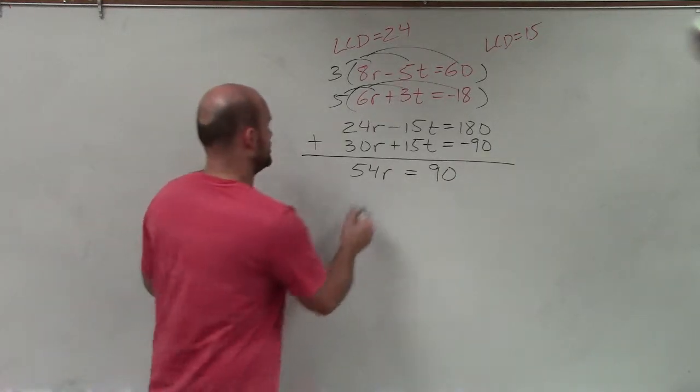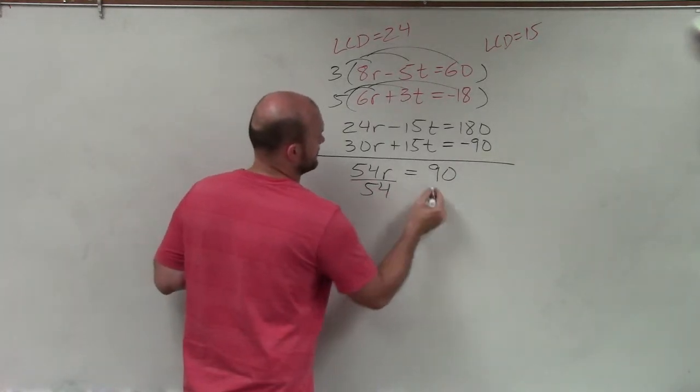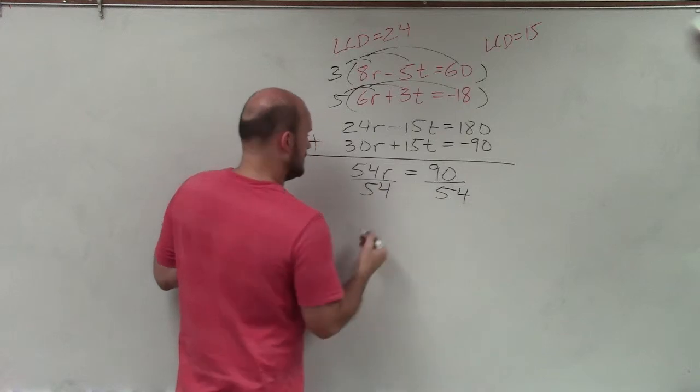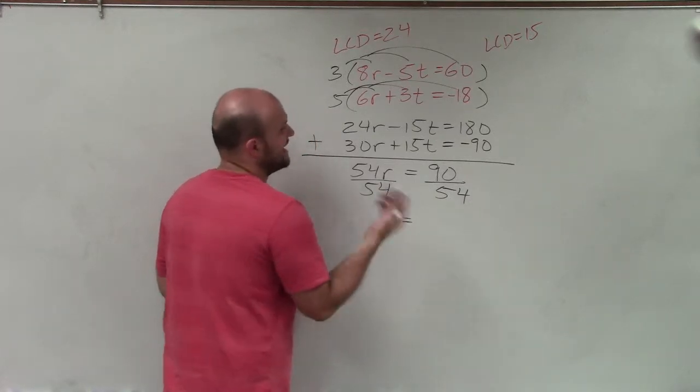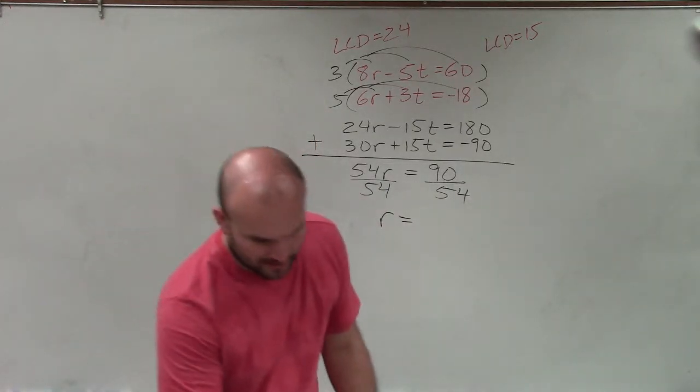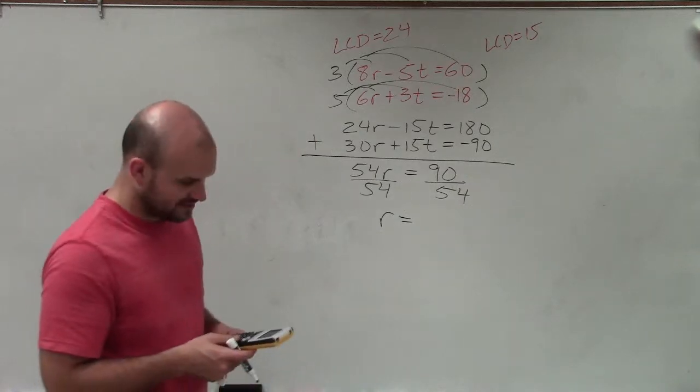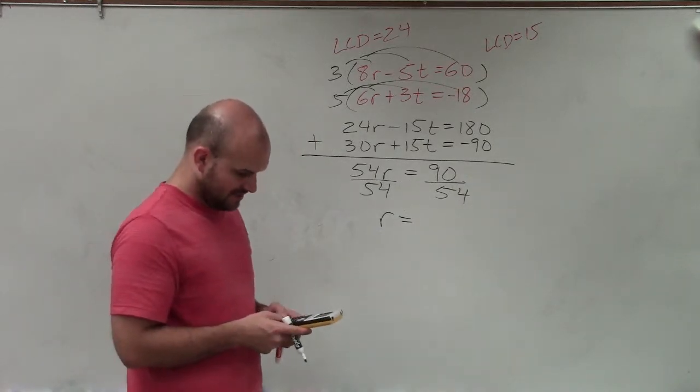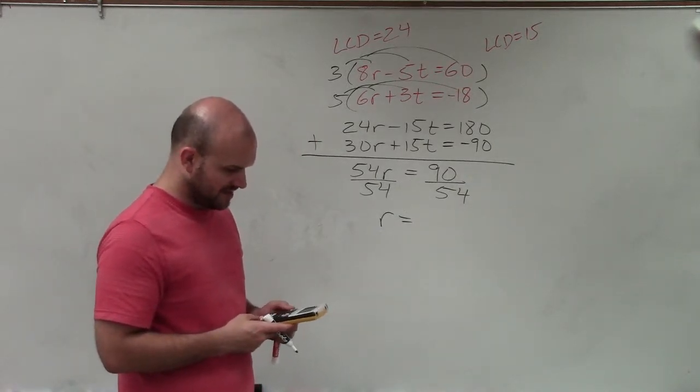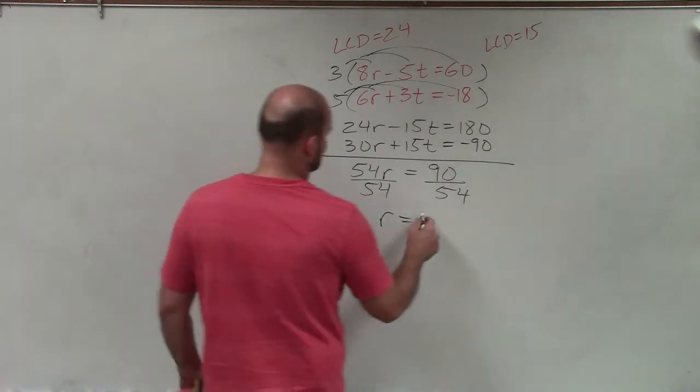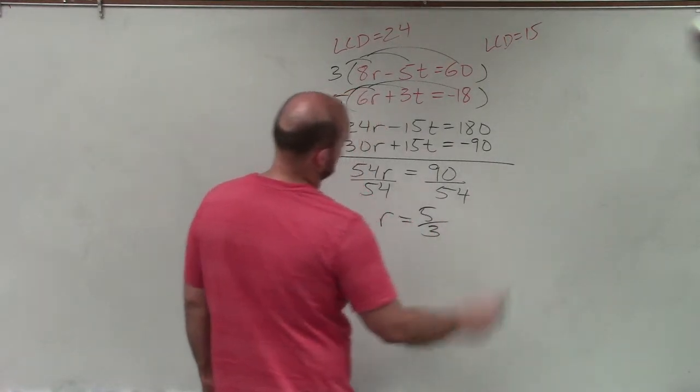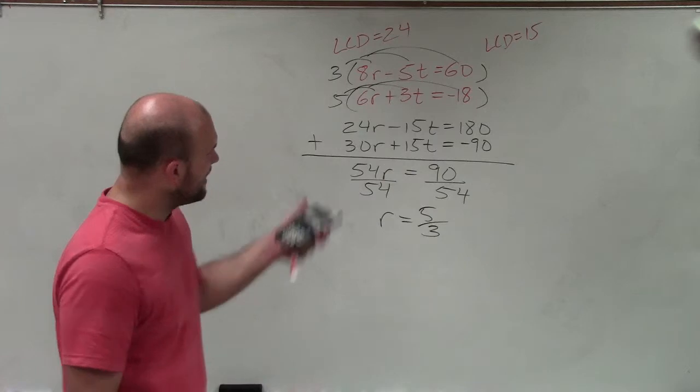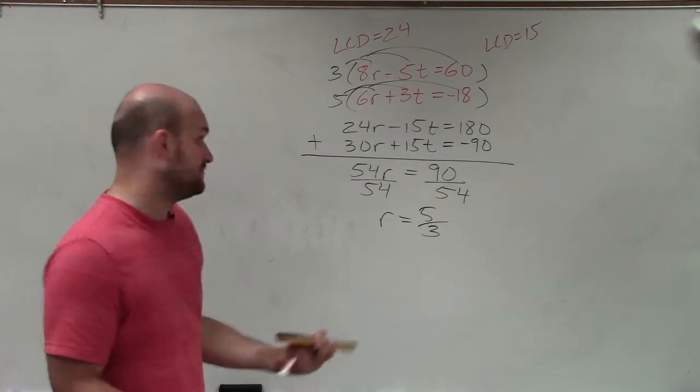Now I need to solve for r. So I'll divide by 54. And therefore, I have r equals 90 divided by 54. And to solve for the rest of that, I guess I'll have to go and see what is the reduced fraction of that, which would be 5 thirds. So by reducing 90 over 54, I get 5 thirds.